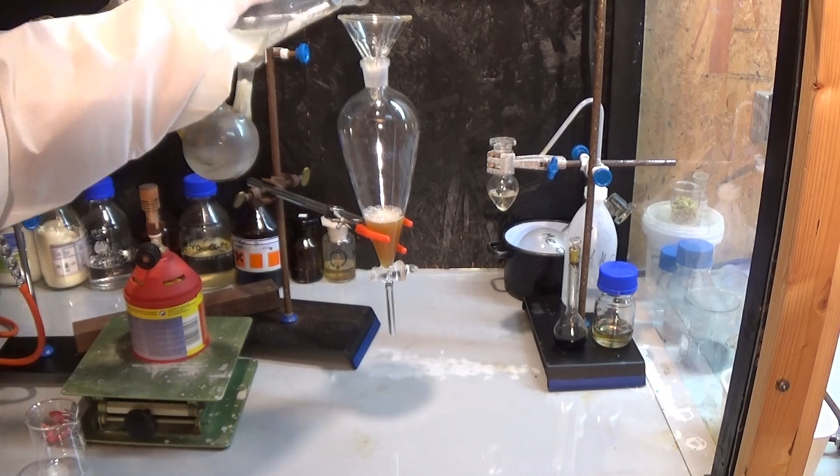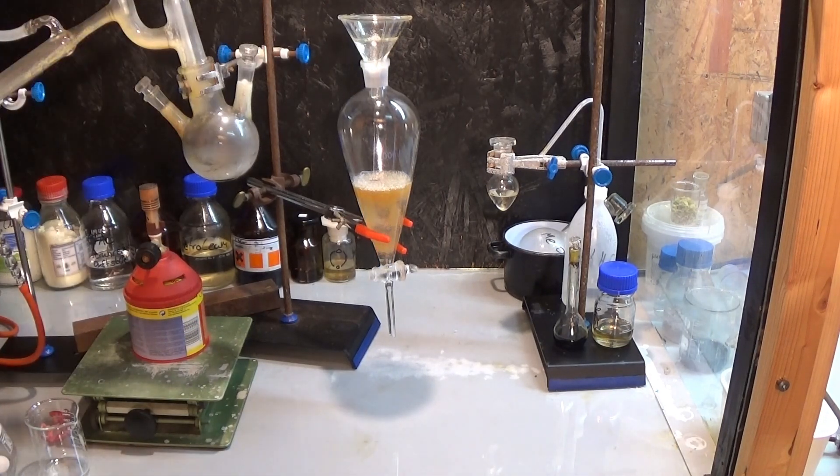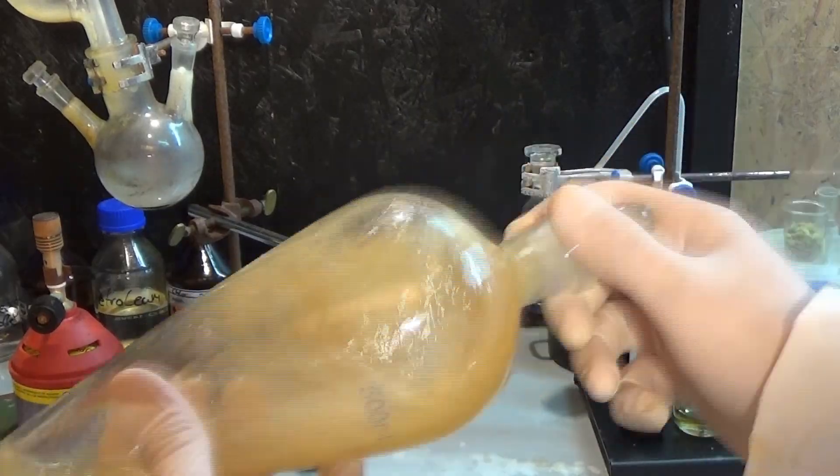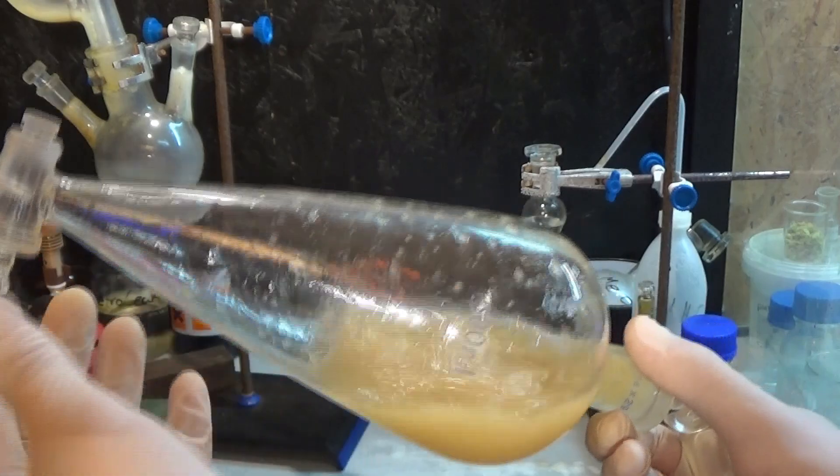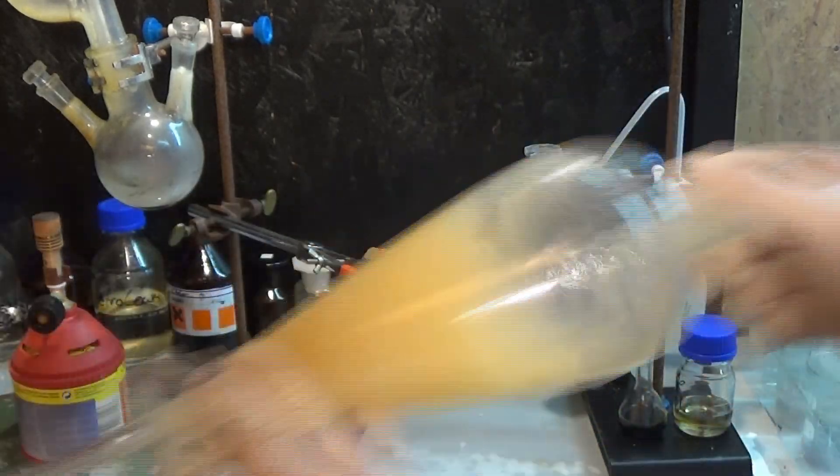Therefore we have to get rid of all components that are water soluble, so we wash it with some water. And like good cocktails, we shake it and vent, and shake again. Now we let it stand to separate and voila, we have some crude styrene.